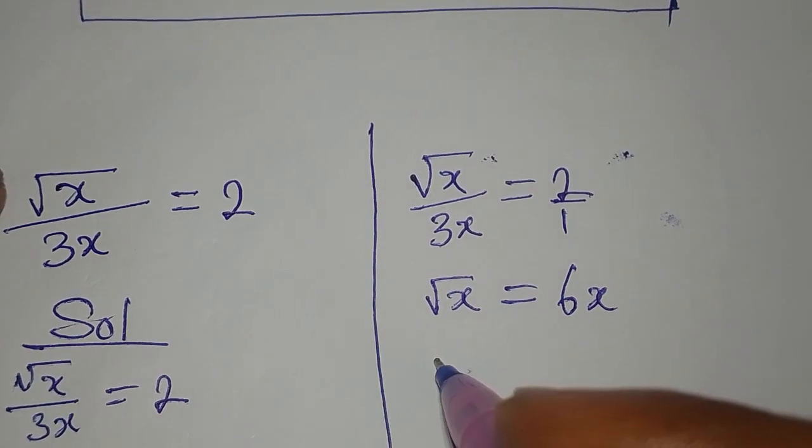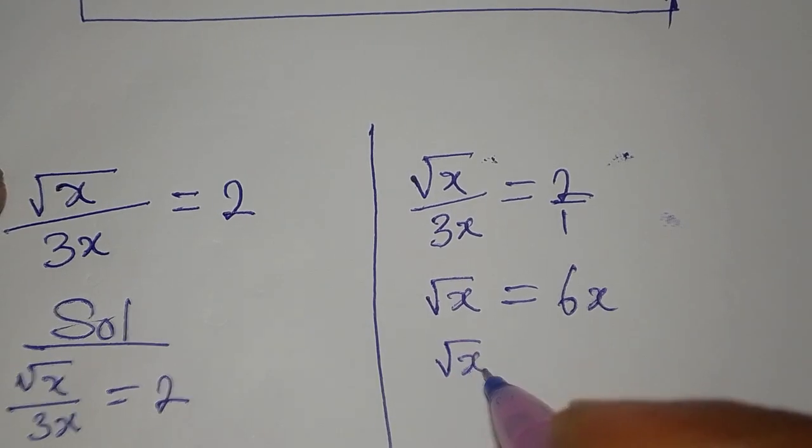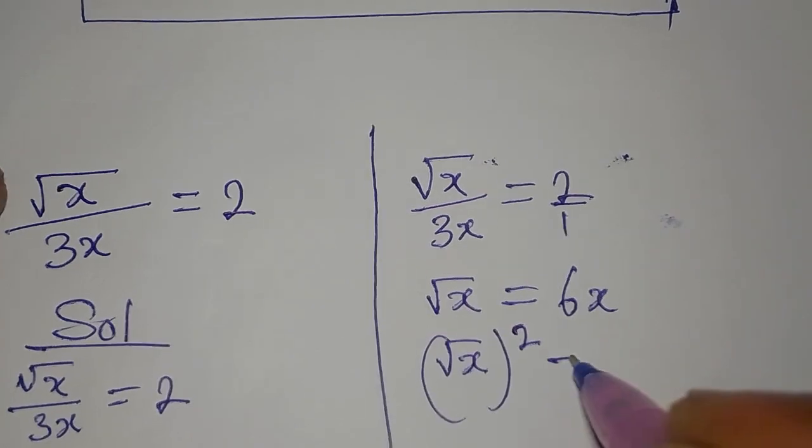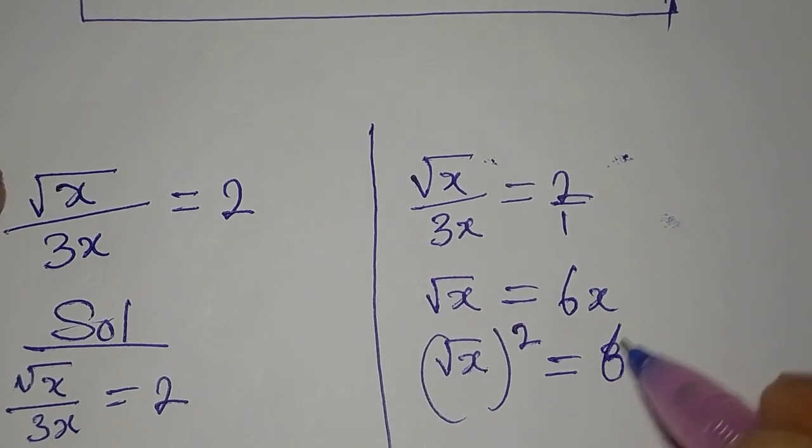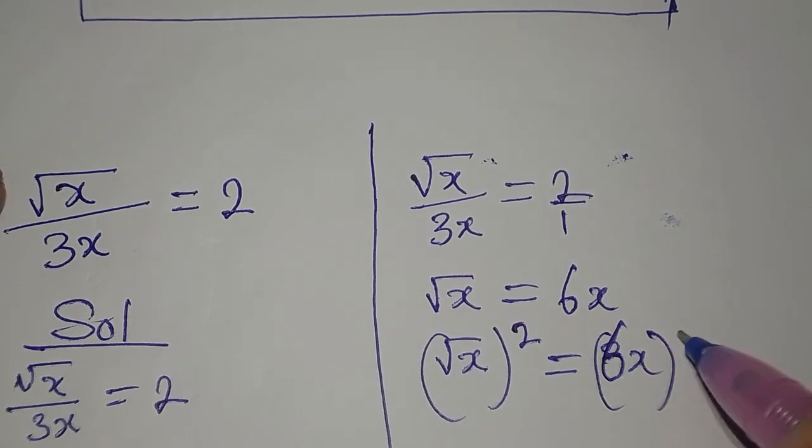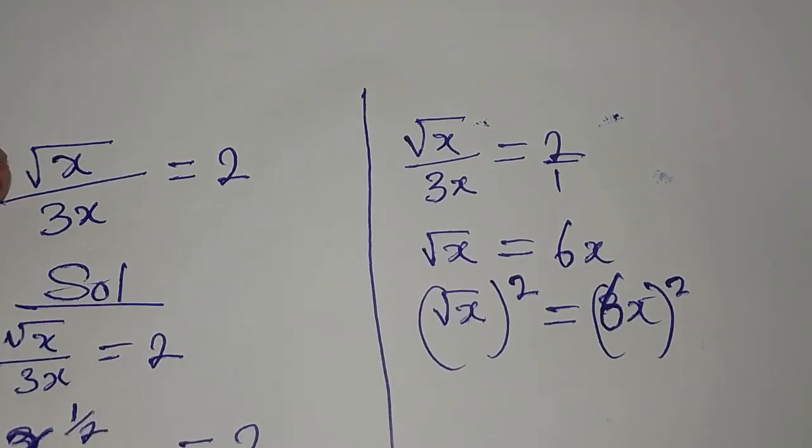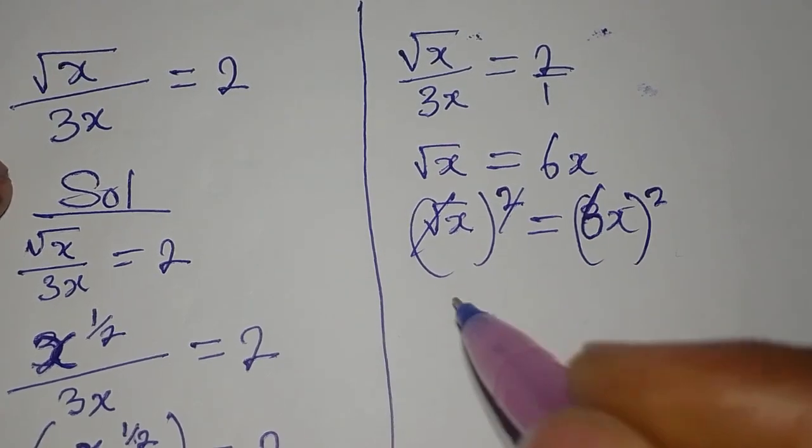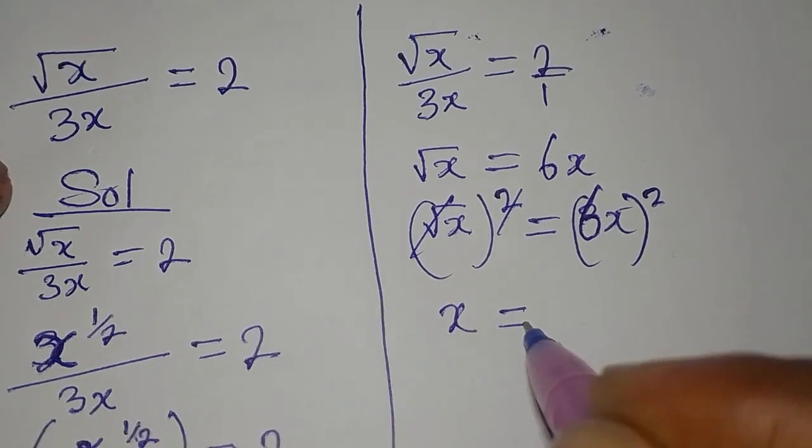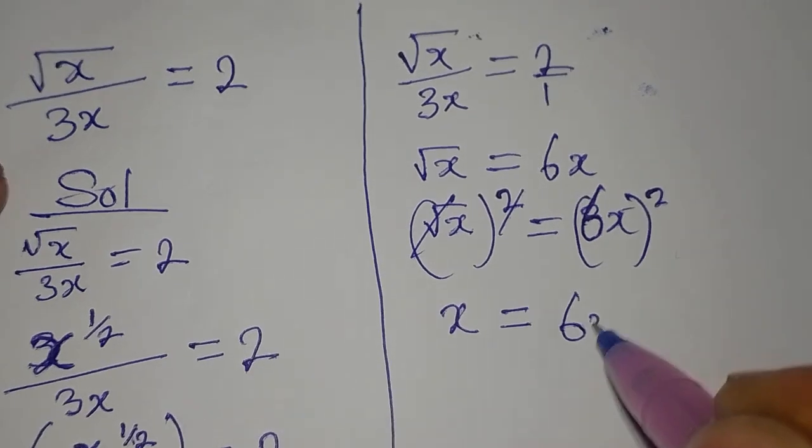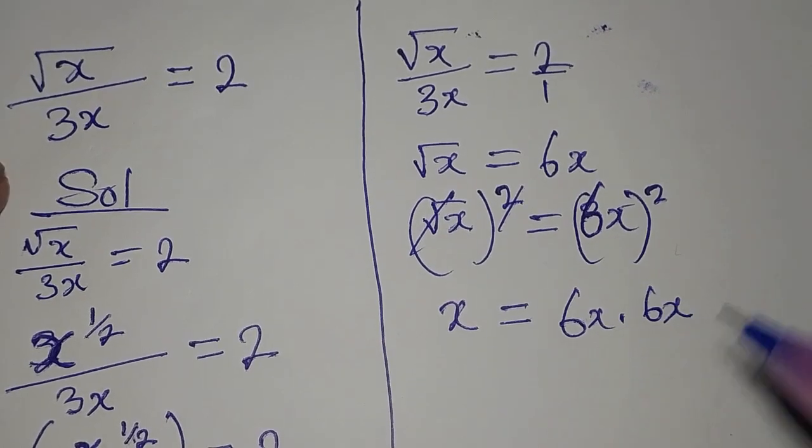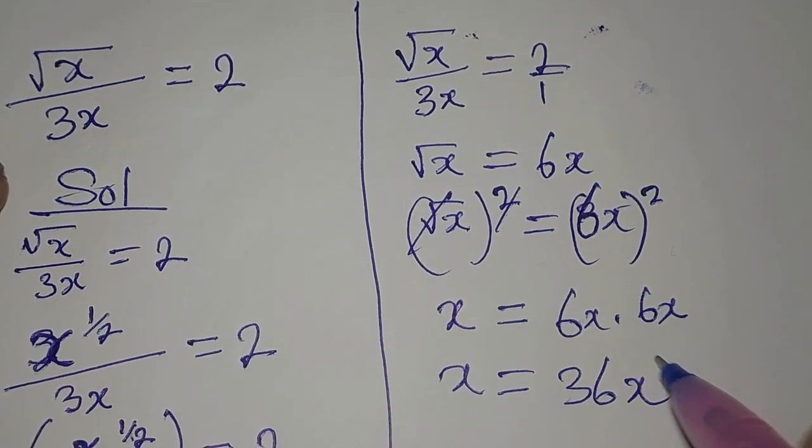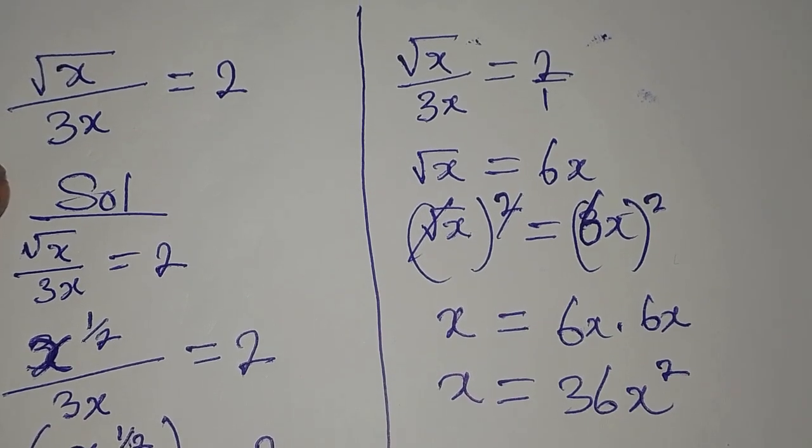What should we do? We have root x squared to be equal to 6x squared. We will now continue. This is going to take this away, and then x will be equal to 6x times 6x. So our x equals 36x squared.